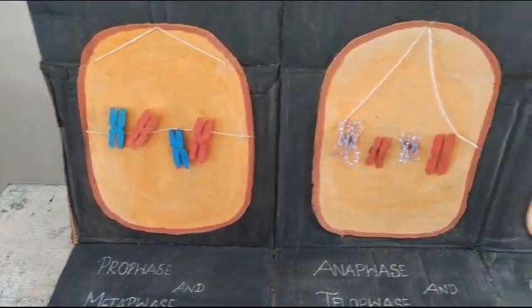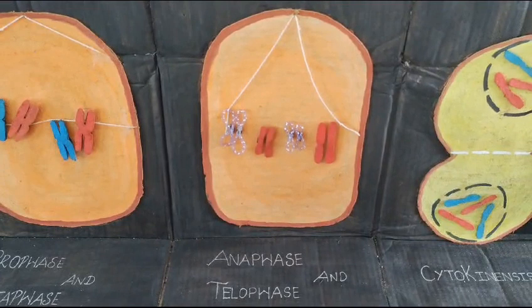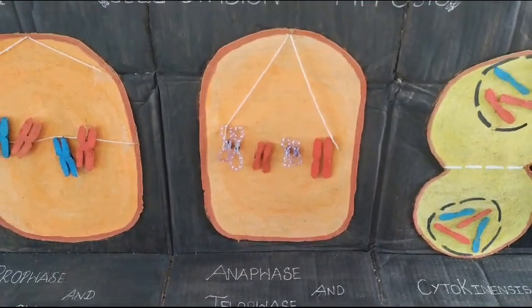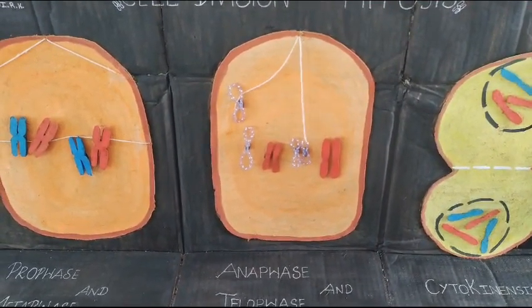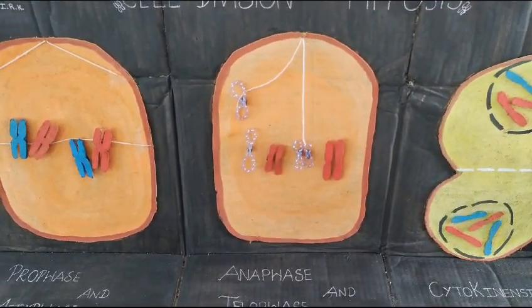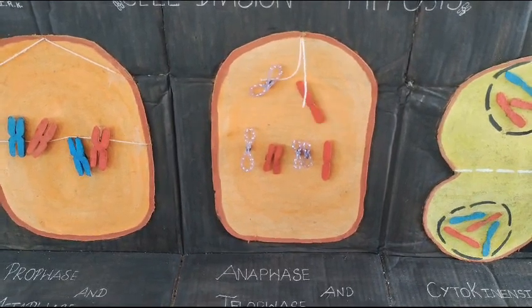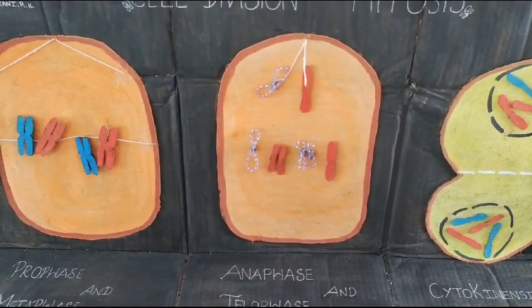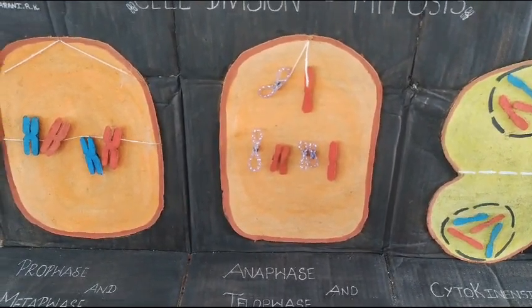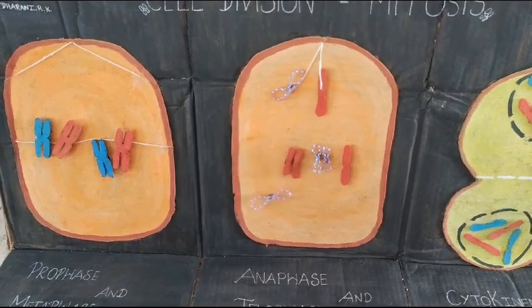And next, in anaphase, these spindle fibers will split the sister chromatids into non-sister chromatids, and they will pull the chromatids towards the opposite poles of the cell.